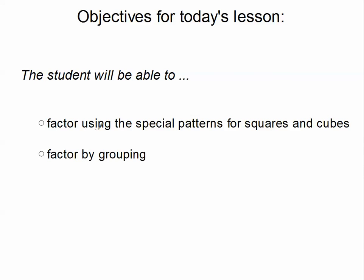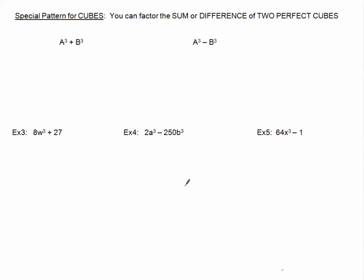In this second tutorial, we will factor using the special patterns for cubes. You can factor the sum or the difference of two perfect cubes. We're talking about two things that are binomials, so that's the indicator that there is some sort of special pattern going on. For cubes, you can factor the sum or the difference. It is a little bit more complicated of a pattern than the difference of two perfect squares, but it is still a pattern that you can recreate and practice.